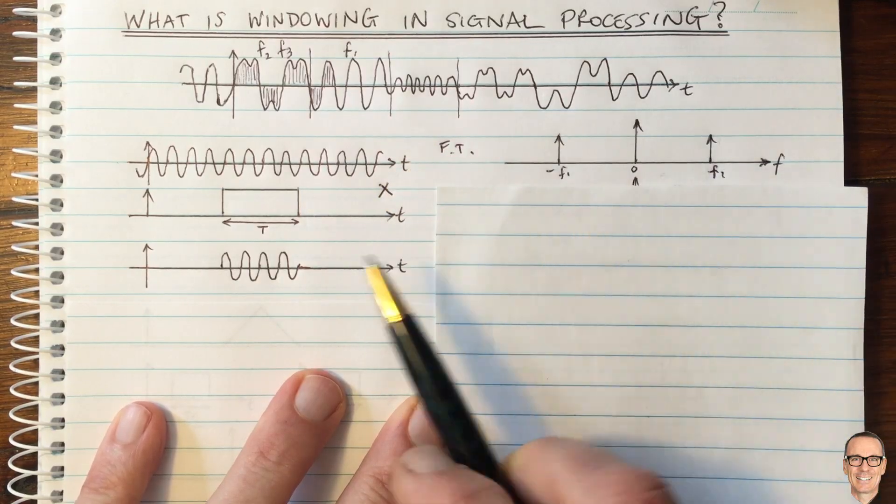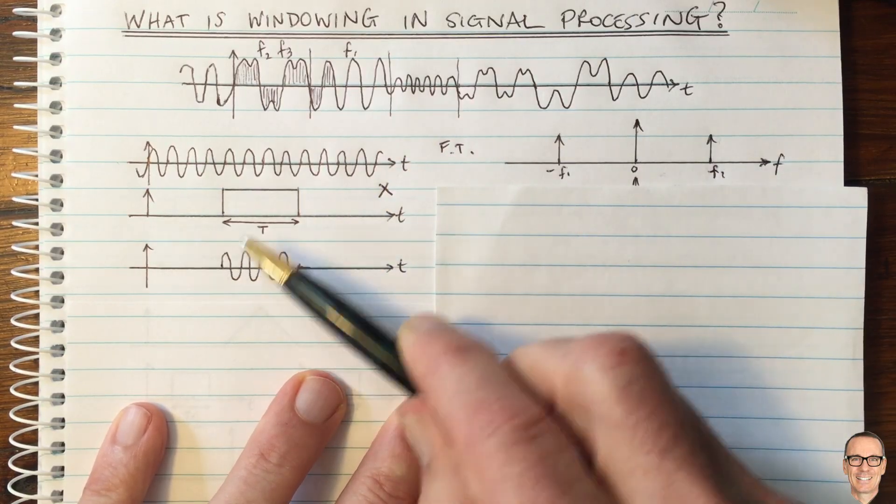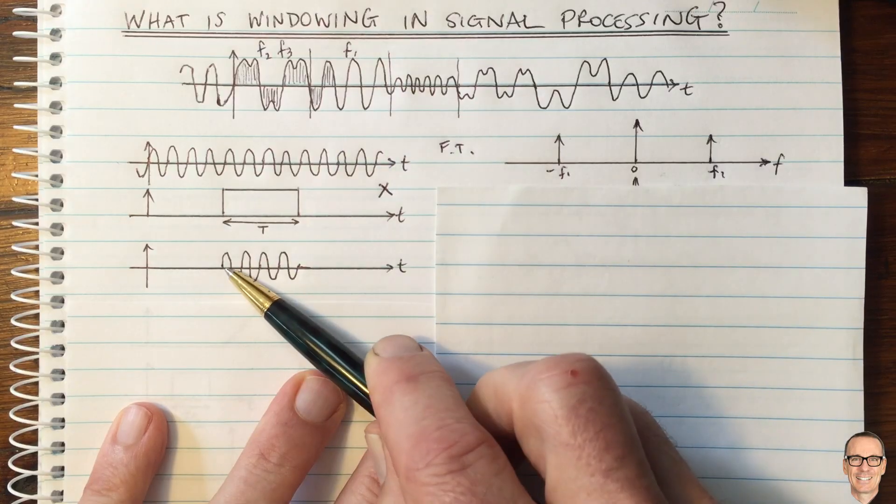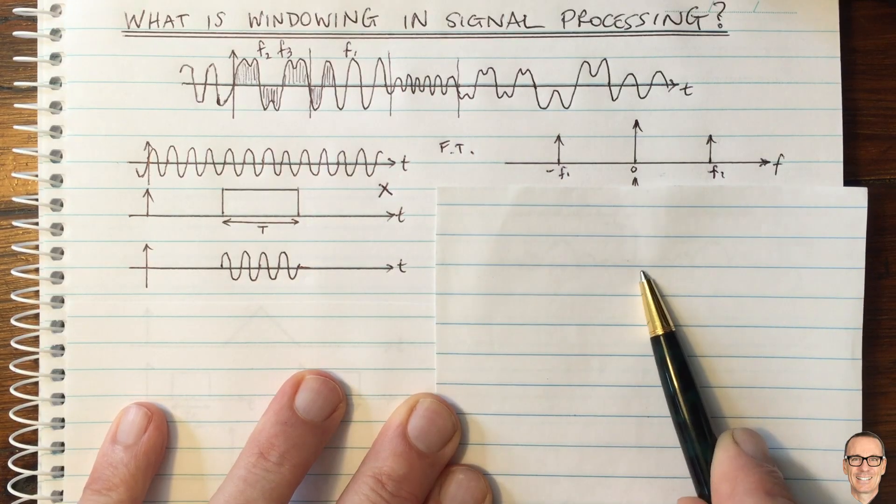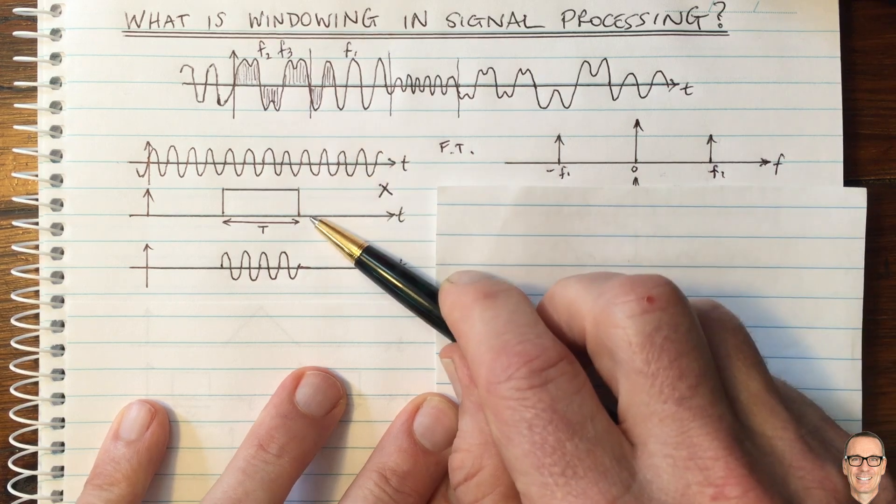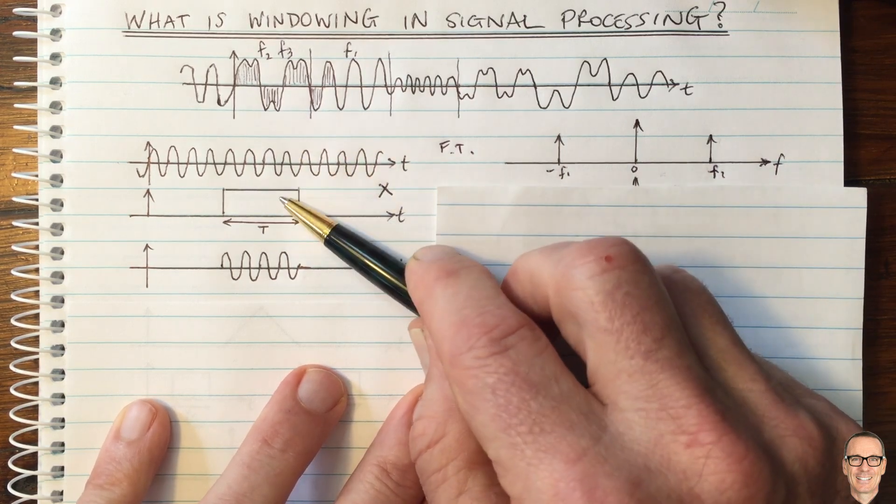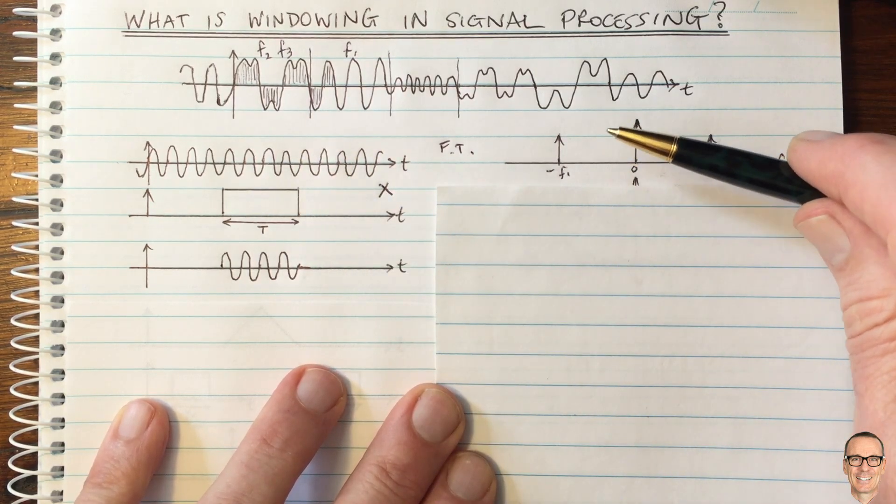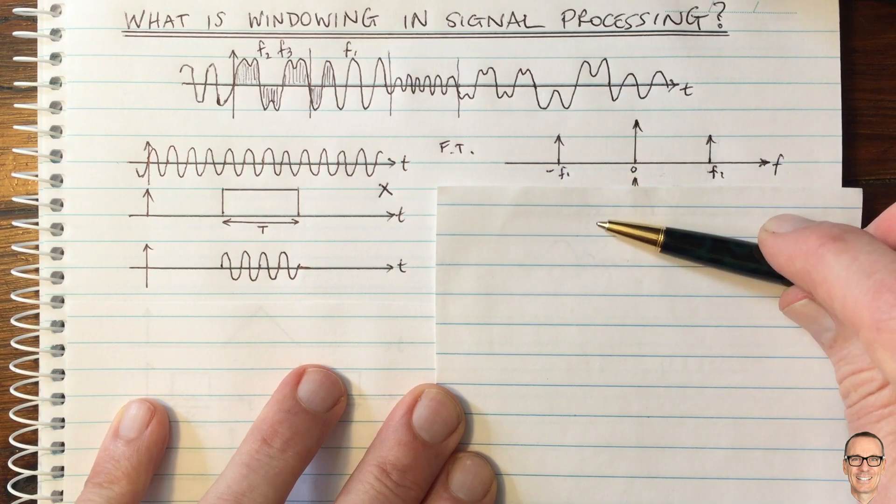So what has happened in the frequency domain? When you take this measurement just over that period of time, what do you have in the frequency domain? Well, because it's a multiplication in the time domain between these two signals here, you're going to have a convolution in the frequency domain.